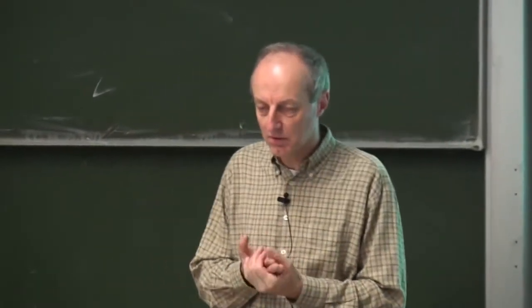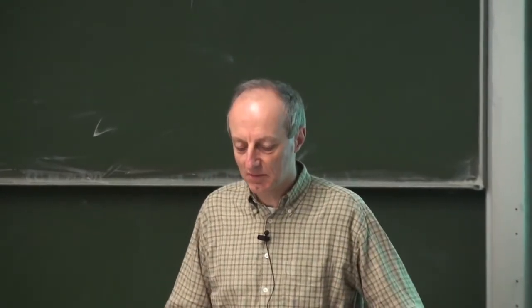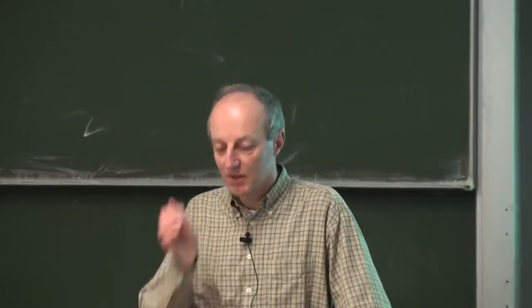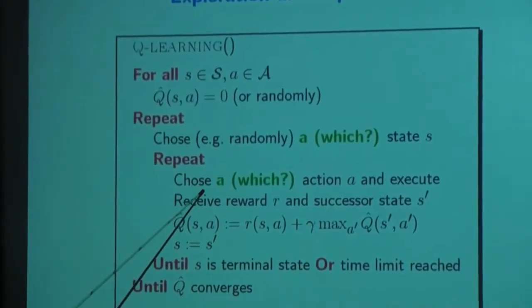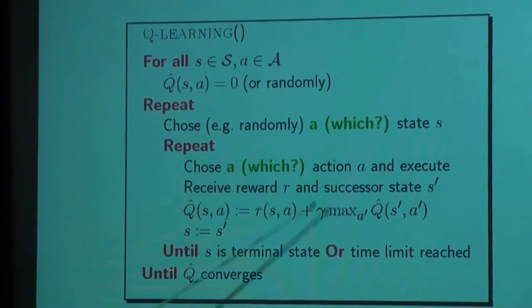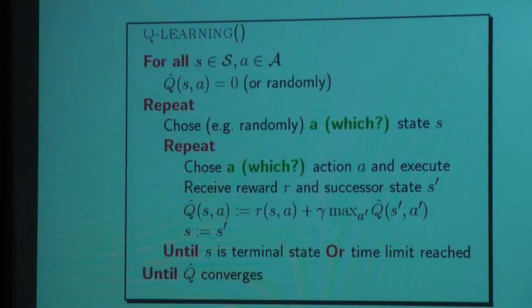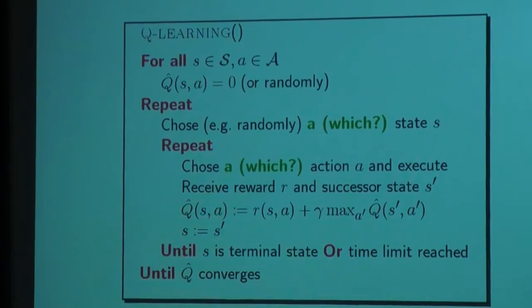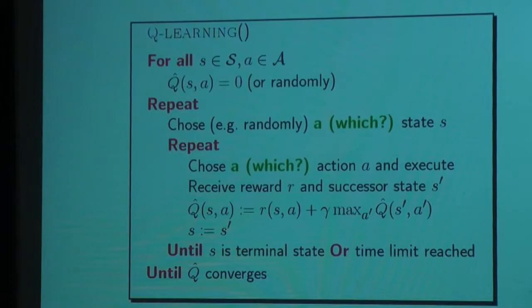Yesterday, the last topic was the exploration-exploitation dilemma in reinforcement learning. When we look at our Q-learning algorithm, a very important question is how to choose the next action. The good news is for the convergence proof, it does not matter. We have a convergence guarantee of Q-learning whenever we use a fair action selection strategy.